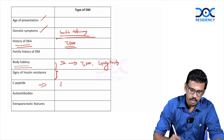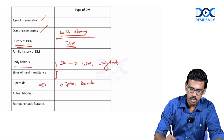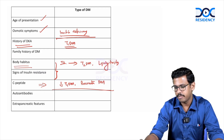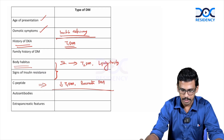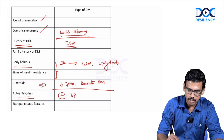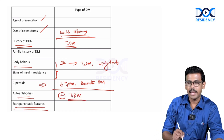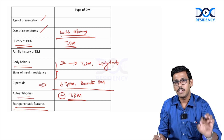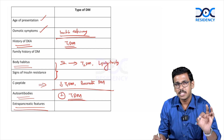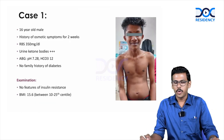C-peptide levels will be low in type 1 diabetes and in pancreatic diabetes, because in pancreatic diabetes there is destruction to the islets of Langerhans. Autoantibodies will be positive in type 1 diabetes and negative in all other cases. Certain extra-pancreatic features can provide specific clues regarding the underlying etiology.